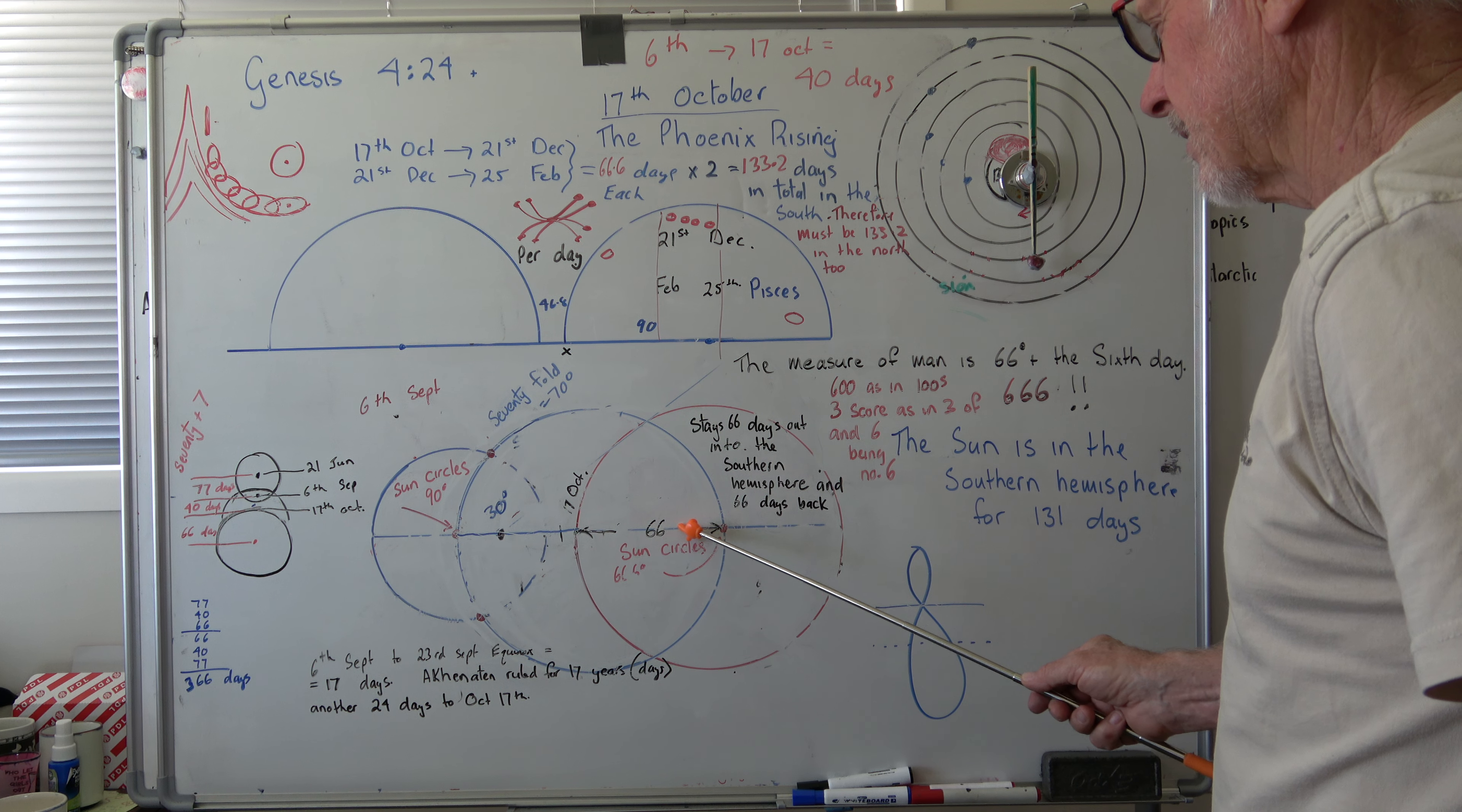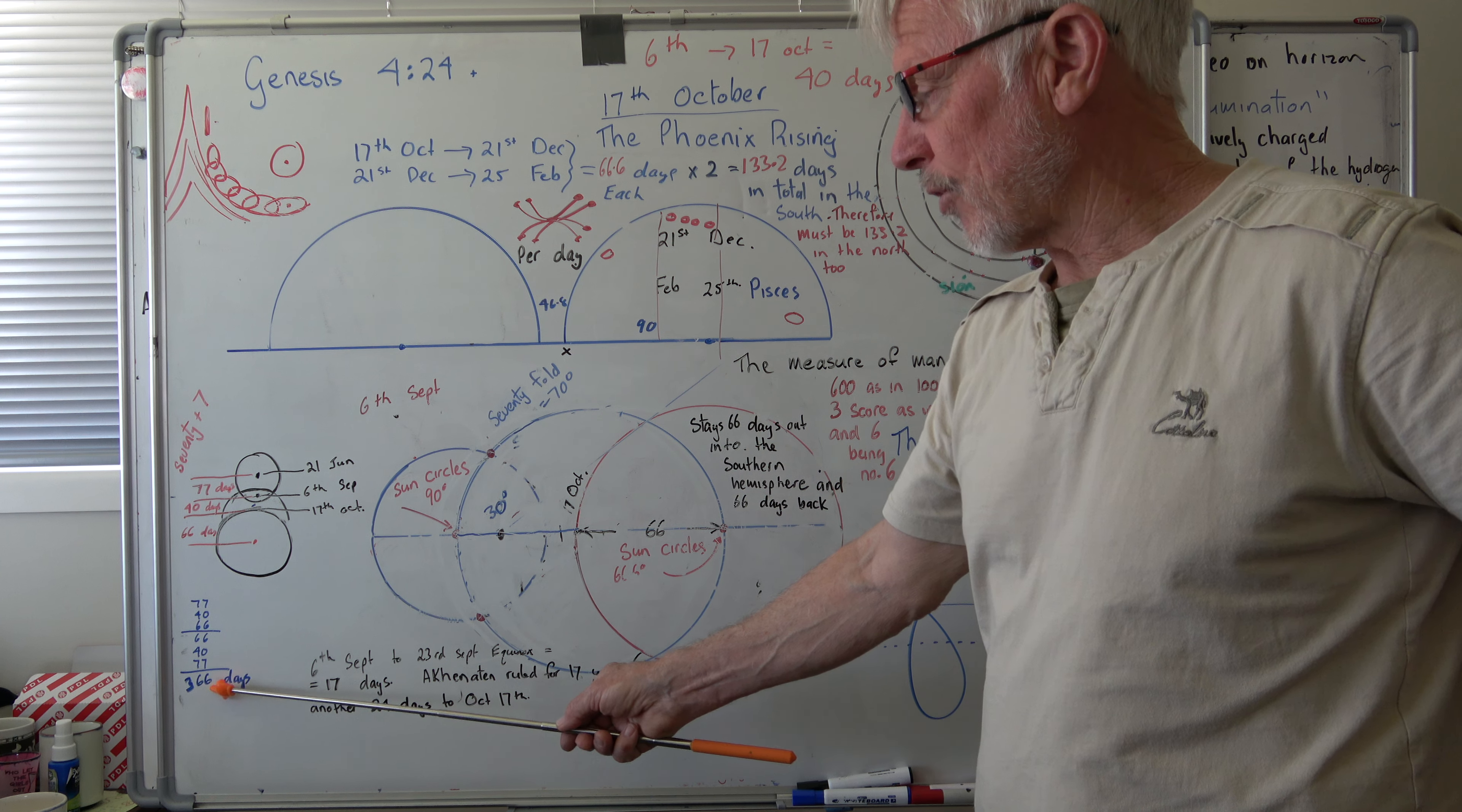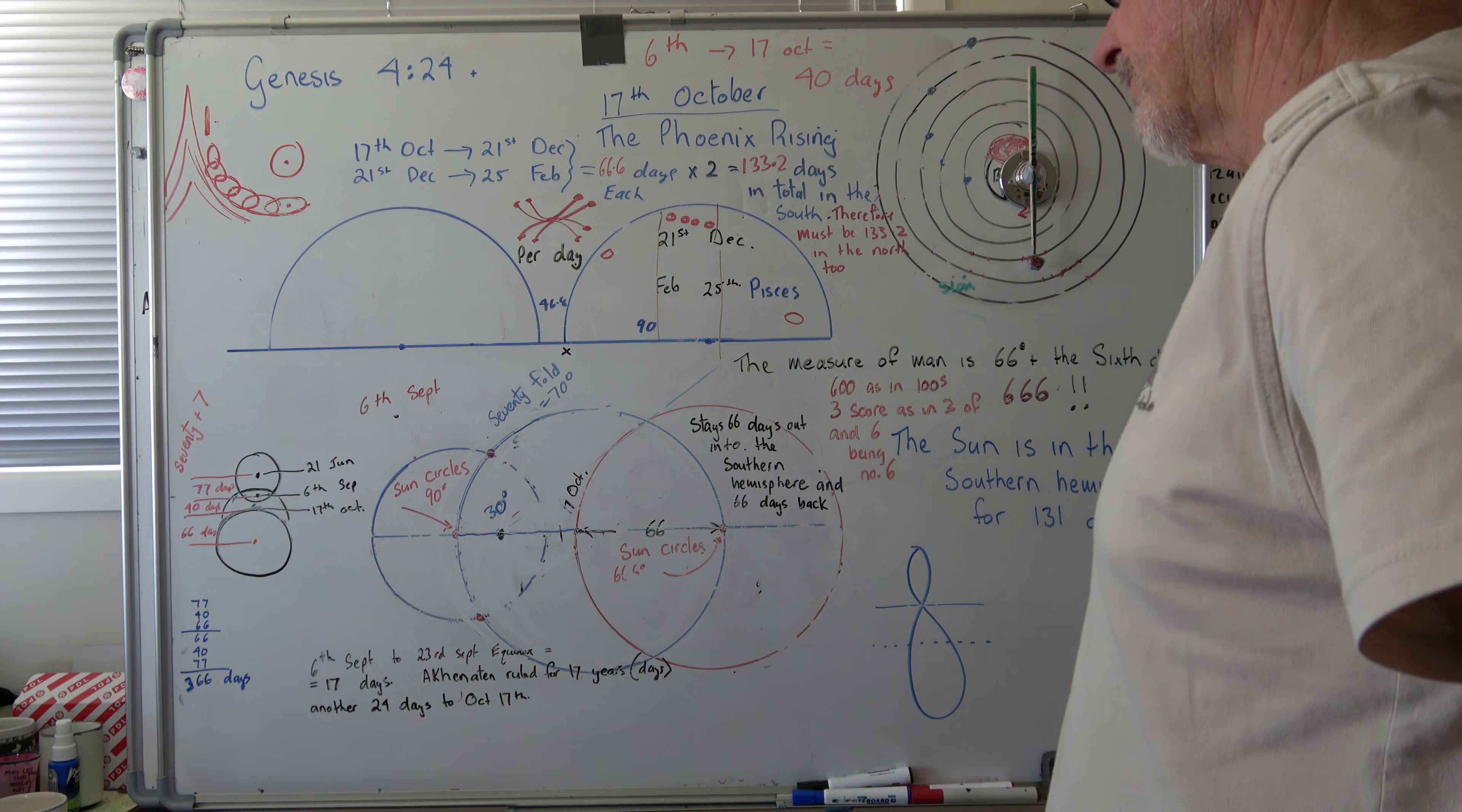For at least three days anyway, but there's five holy days. I'm thinking it's just the five holy days that's going around without declination. And it's all at this point here of the sun's crossover. So 66 days out into the southern hemisphere and 66 days back. It comes all the way out here from the 17th of October, 66 degrees, 66 days, all the way back. It's all degrees in days. The sun is in the southern hemisphere for 131 days.